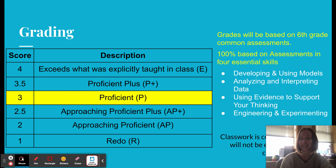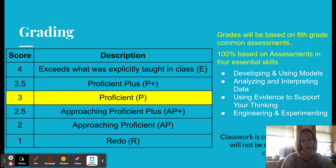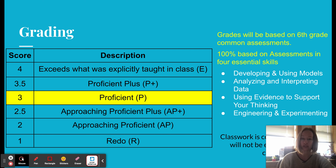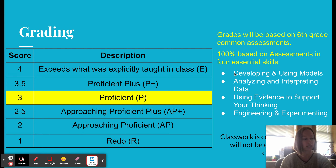We're graded on the 4-3-2-1 proficiency scales, which should look very similar to elementary school. It is 100% based off assessment. Students can always come in and work with me to redo an assessment if they feel the score didn't reflect their learning. You will see scores reported in Infinite Campus according to these four standards.